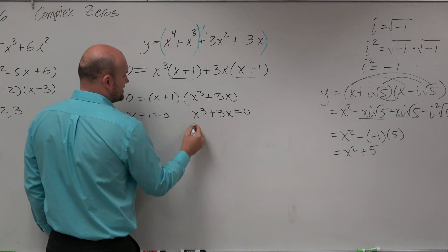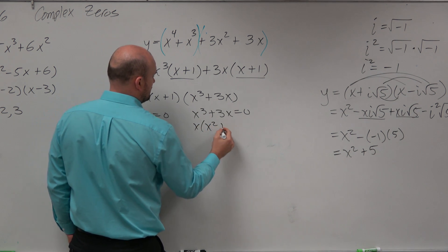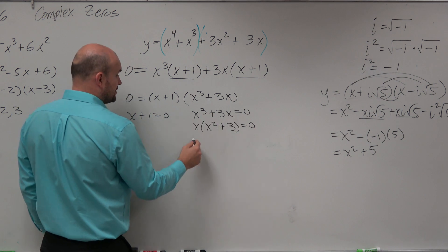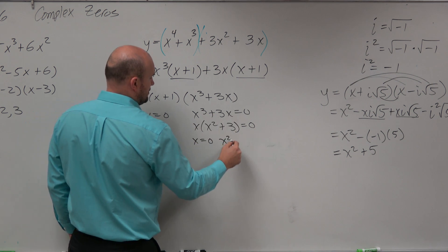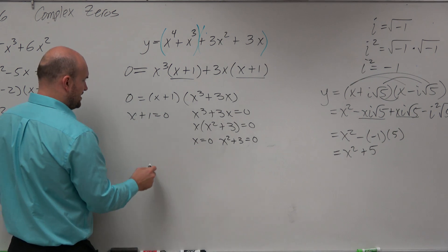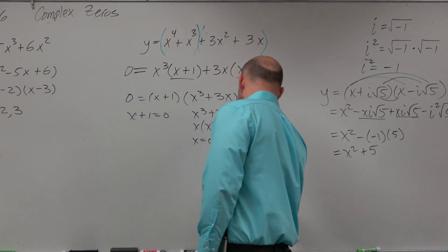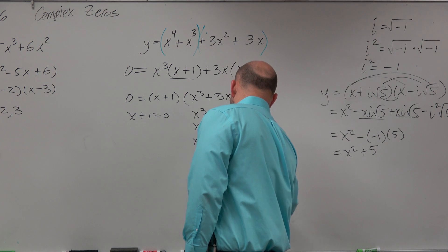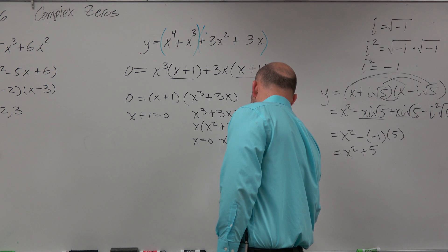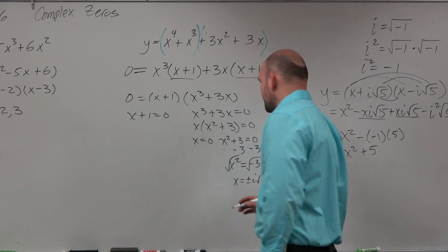You can factor out an x again, and then set them equal to 0 one more time. And therefore, it looks like we have, when I solve this, I subtract the 3 on both sides, I get x squared equals negative 3. Square root both sides, x equals plus or minus i square root of 3.